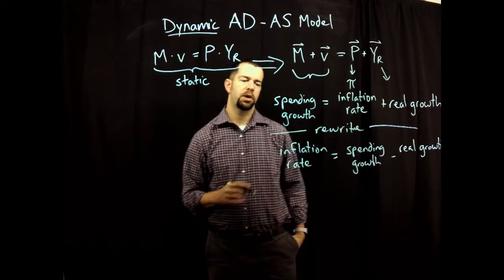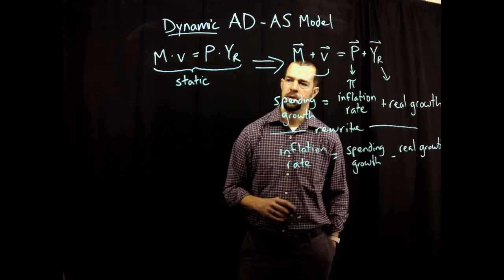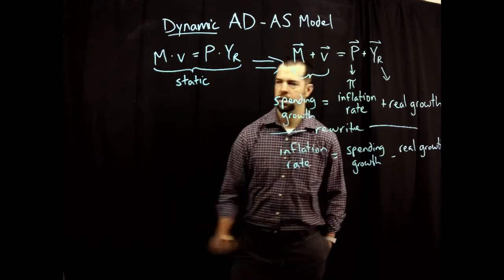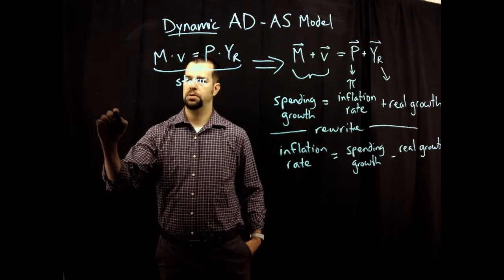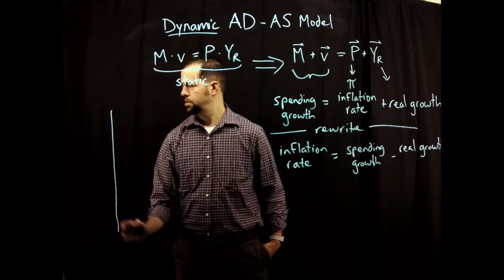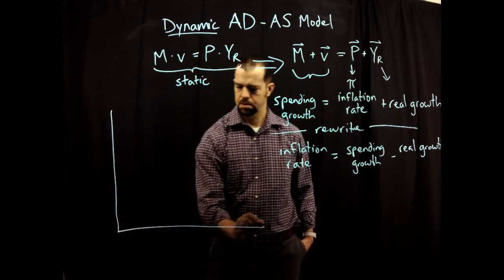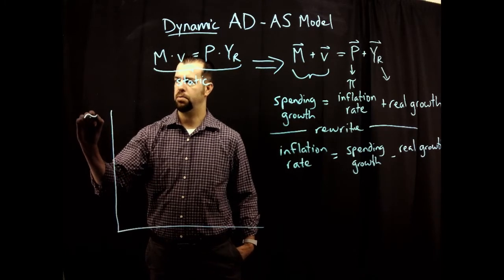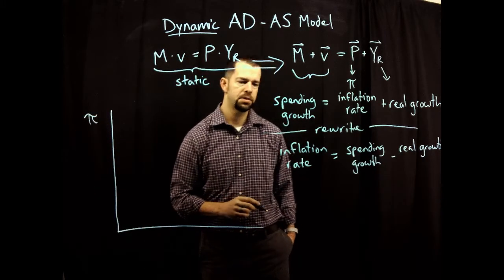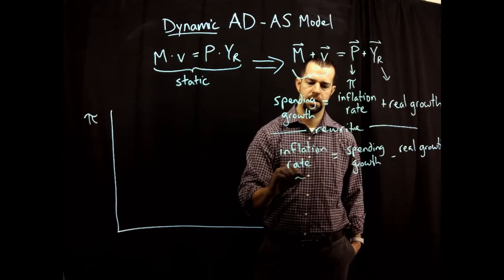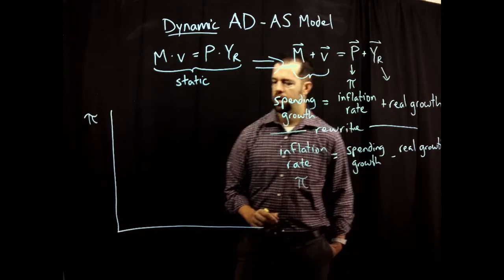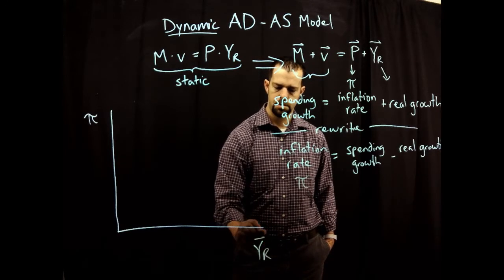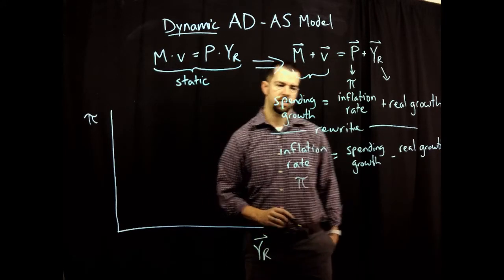So now what we're going to do is put these on the respective axes. We're going to bring forth our axes and put the inflation rate, denoted by pi, on the y-axis. And we're going to take the growth rate of real GDP and put it on the x-axis.